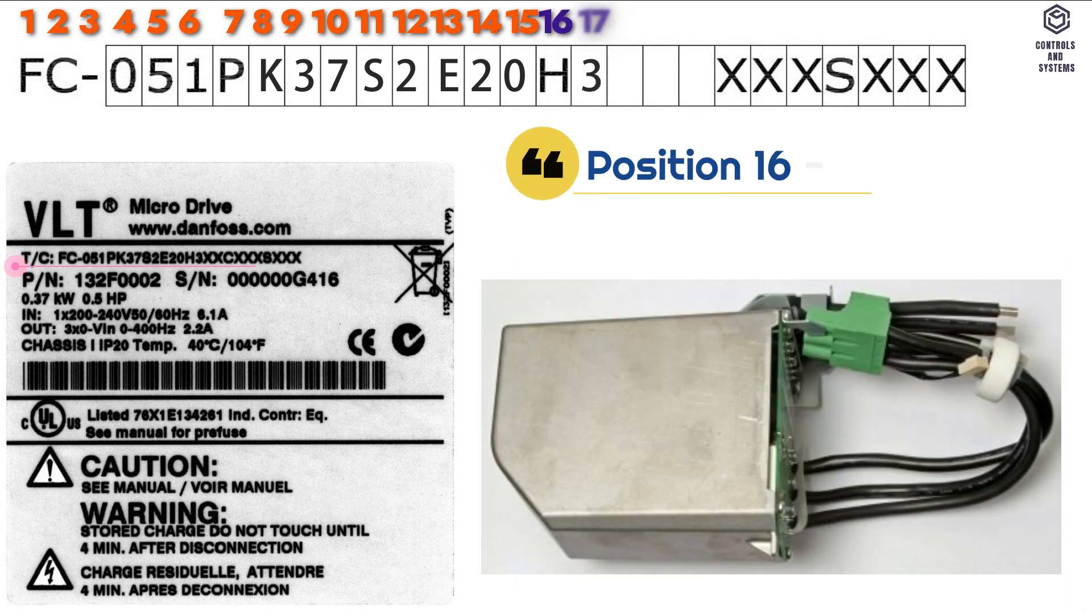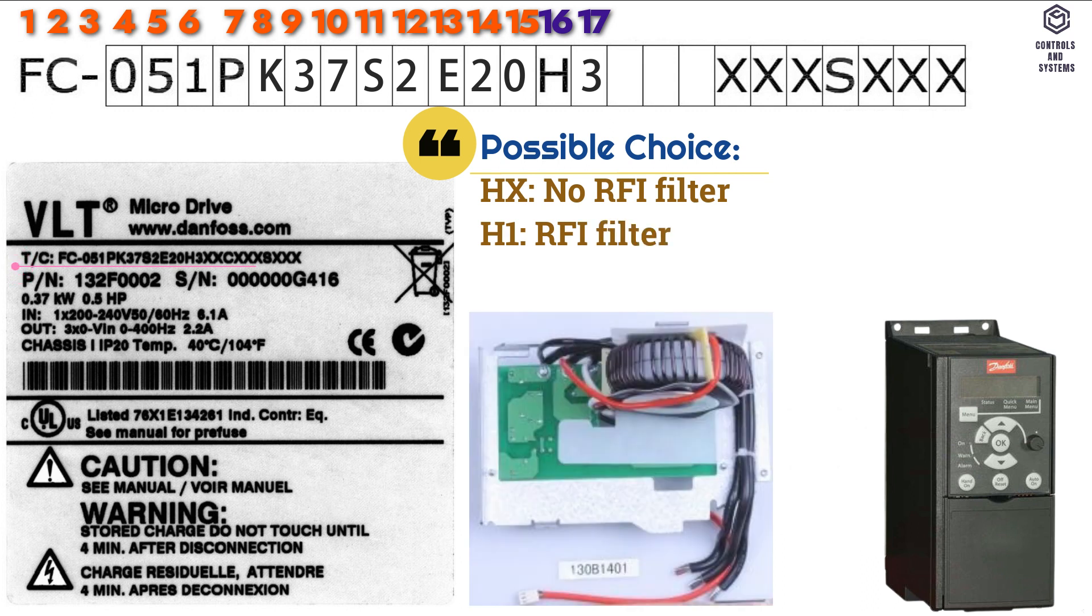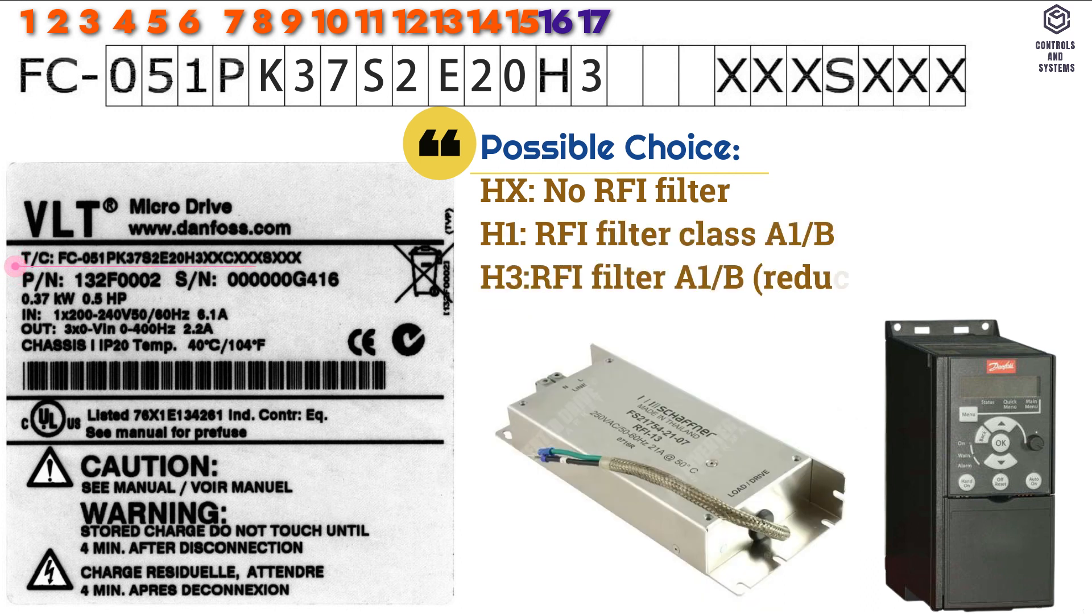Position 16 to 17 is RFI filter, possible choice is HX that means no RFI filter, H1 that means RFI filter class A1 slash B, H3 that means RFI filter A1 slash B reduced cable length.